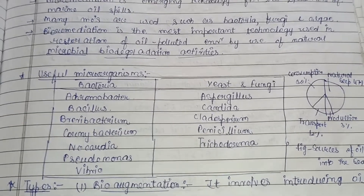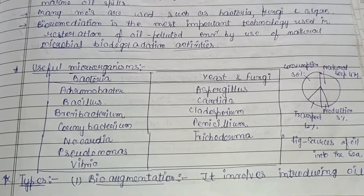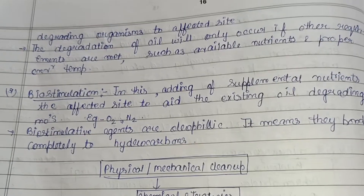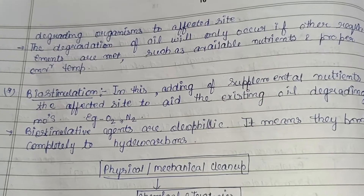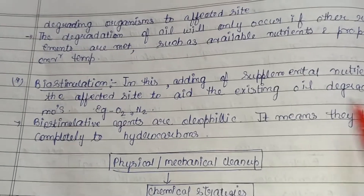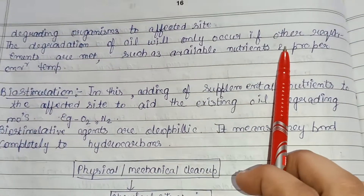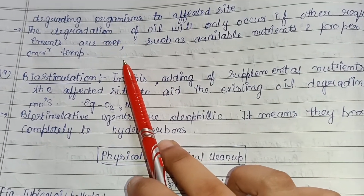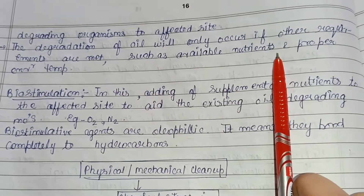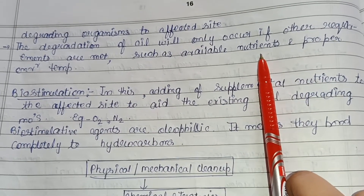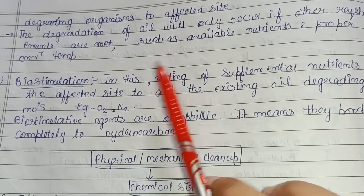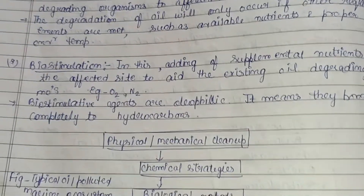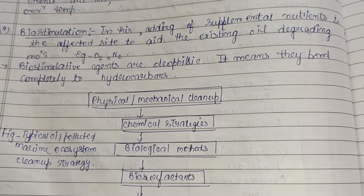The first type of bioremediation method is bio-augmentation, which involves introducing oil-degrading organisms to the affected site. However, degradation of oil will only occur if other requirements are met — not only microorganisms are needed, but also available nutrients for microbial growth and proper environmental conditions including temperature.